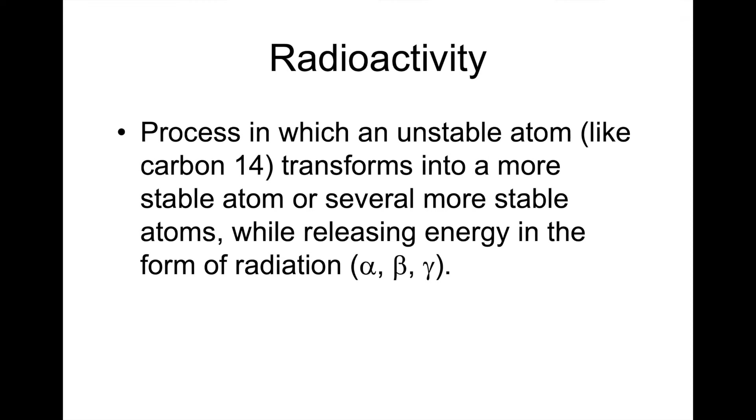Radioactivity is the process in which an unstable atom such as carbon 14 will transform itself into either one or several smaller atoms that are more stable. It can do that in various ways. Those types of variations are called either alpha, beta, or gamma. We will also talk about fission and fusion in a subsequent lesson, but for today we're just going to talk about alpha, beta, and gamma.